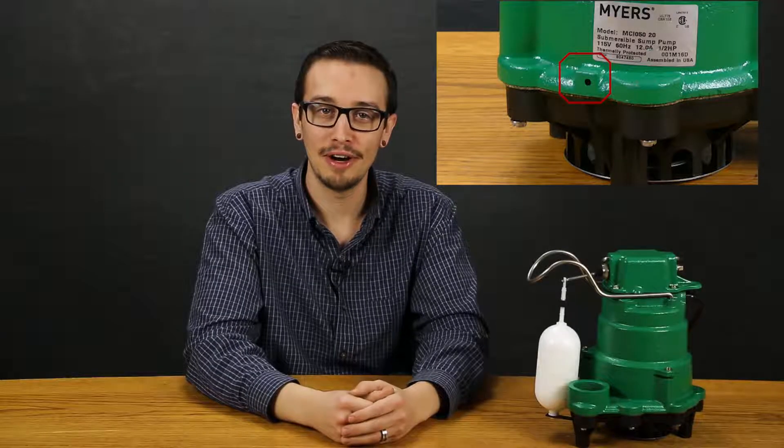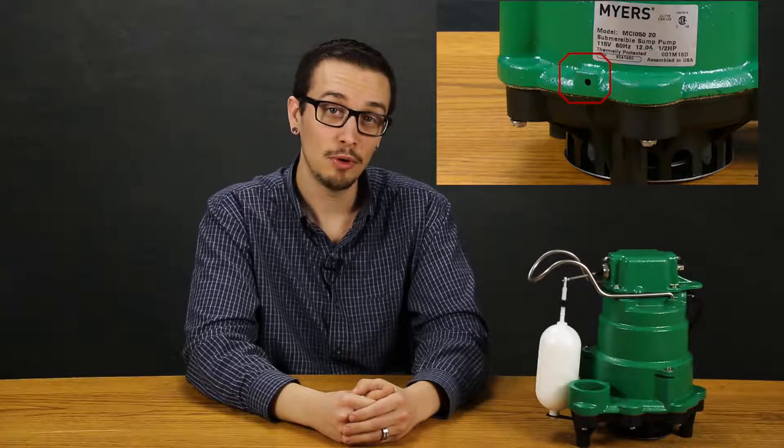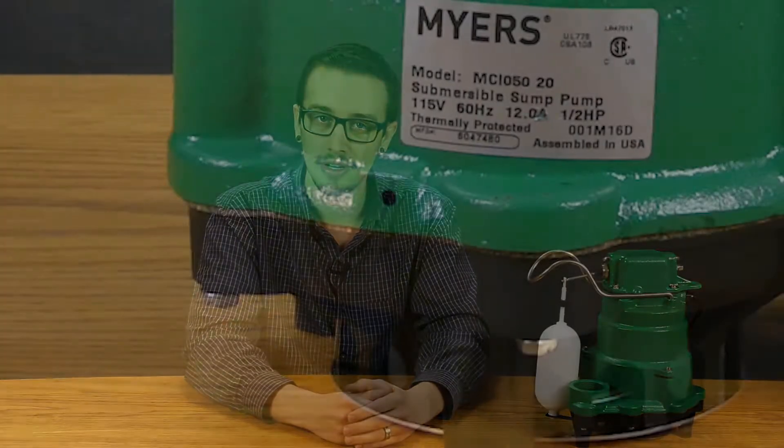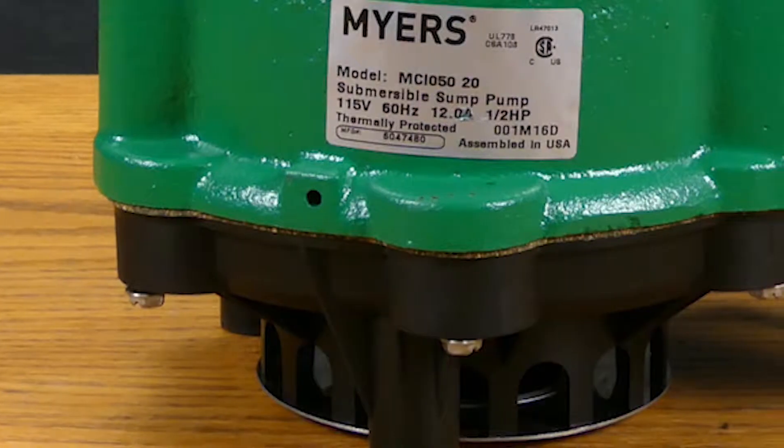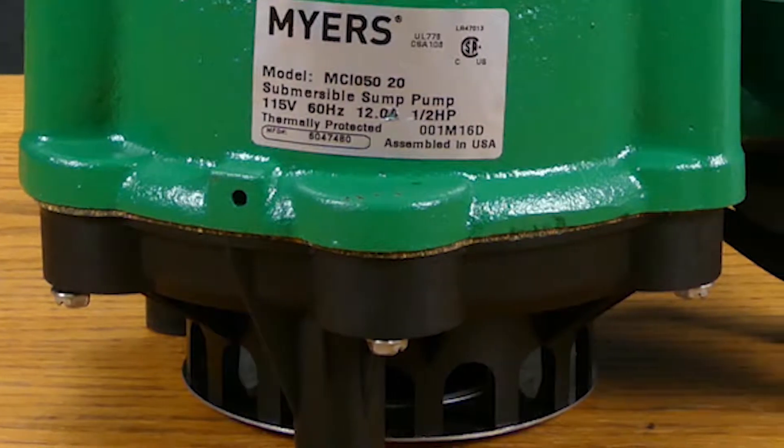The pump also features a vent hole which prevents air locking of the pump. To learn more about what the vent hole does, check out our vent hole video below. Additionally, the underside of the pump volute has a screen that will not allow solids larger than one half of an inch to enter and damage the pump.